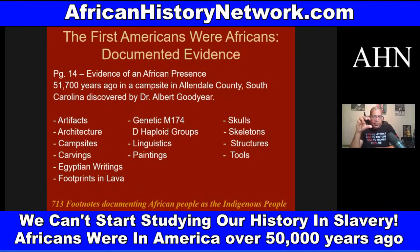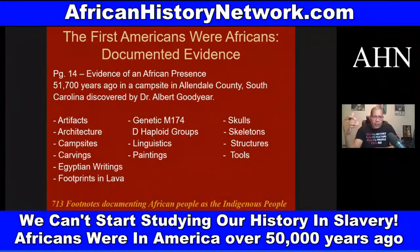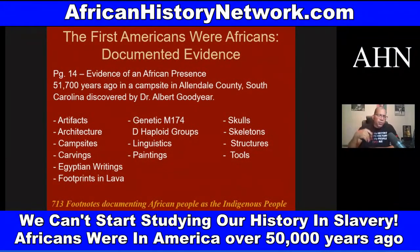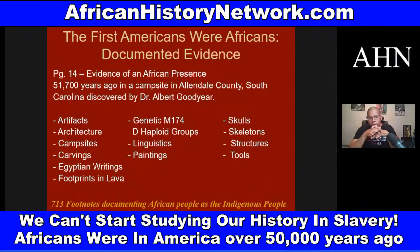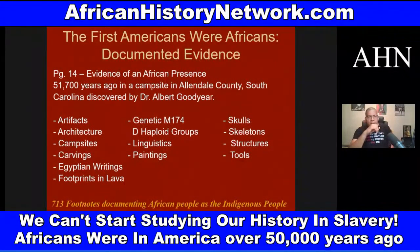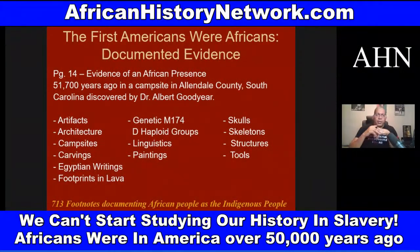New information that came out a few years ago — reported in the New York Times — pushes the African presence in South America back at least 100,000 years ago. These are the Khoisan, who have the oldest DNA on the planet. They come from Southern Africa and traveled all around the world. Their ancestors include the Twa, and they were also here in the land we call the United States. On page 14 of his book, Dr. Hotep deals with evidence of an African presence 51,700 years ago in a campsite in Allendale County, South Carolina, discovered by archaeologist Dr. Albert Goodyear.